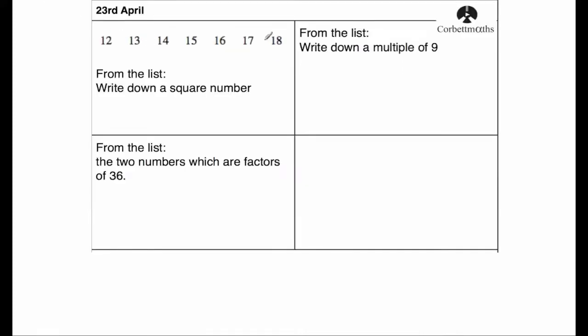Question 1, we've got a list of numbers: 12, 13, 14, 15, 16, 17, and 18. The question said, from the list of numbers, write down a square number.